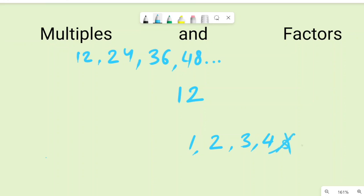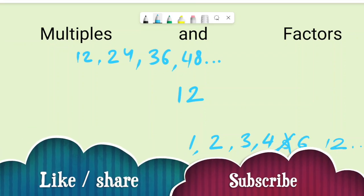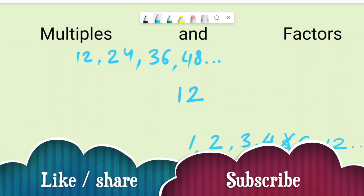12 cannot be divided evenly by 5, so 5 is not a factor, but 6 and 12 itself are factors. This is the difference between multiples and factors. I hope this video is helpful — please share and subscribe to support our channel, and have a nice day!